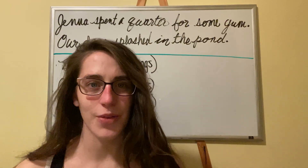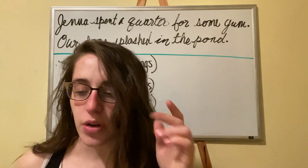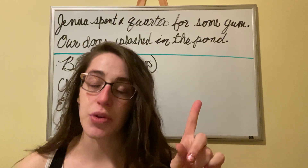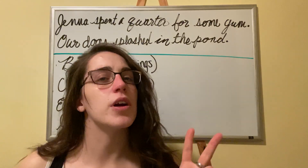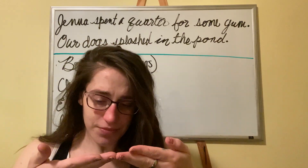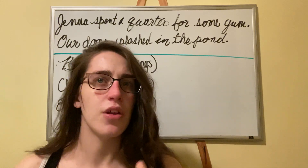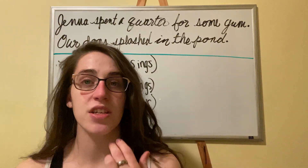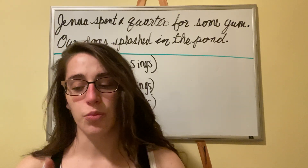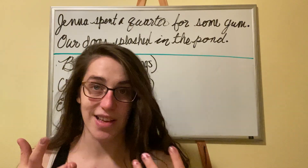Hello, everybody. From Language Arts today, we're focusing on two things. You are going to identify the simple subject and simple predicate in a sentence. Remember, there's two parts to a sentence — the subject and the predicate — but there's also a simple subject and a simple predicate. And by the end of this lesson, we're going to compare subjects and verbs to make them agree, to make them make sense together.